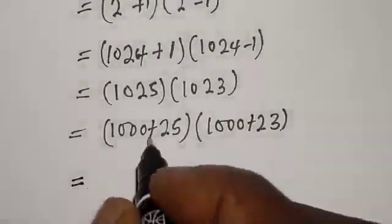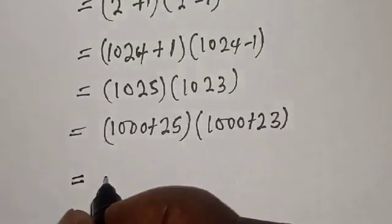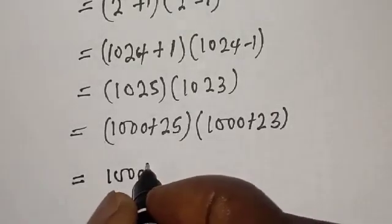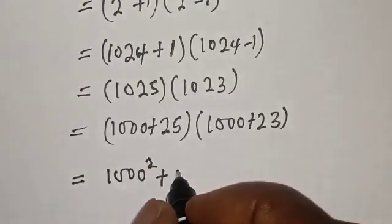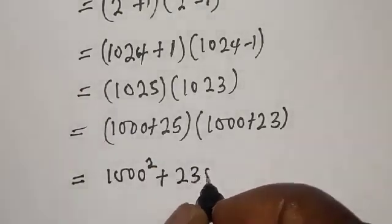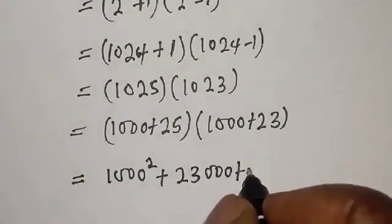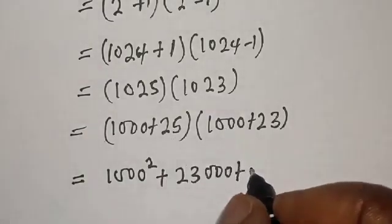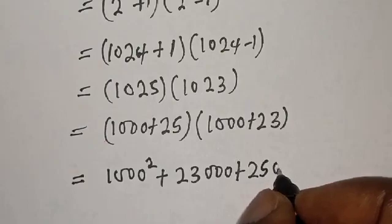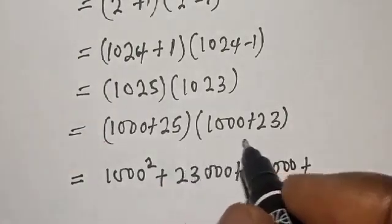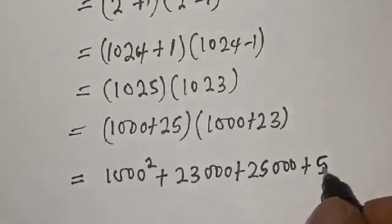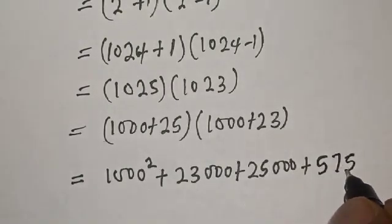This is equal to 1000 times 1000 or 1000 squared plus 23,000 plus 25,000, plus 23 times 25, which is 575.